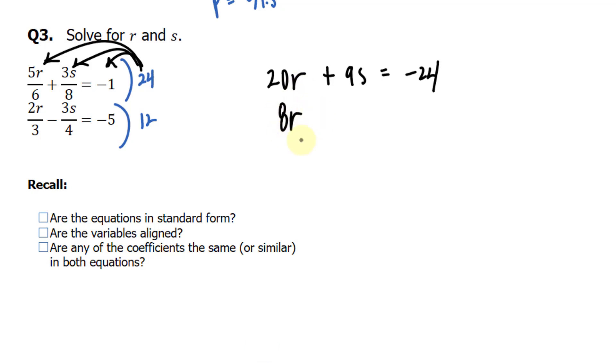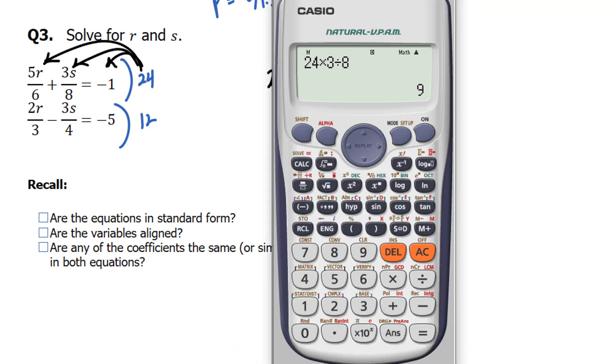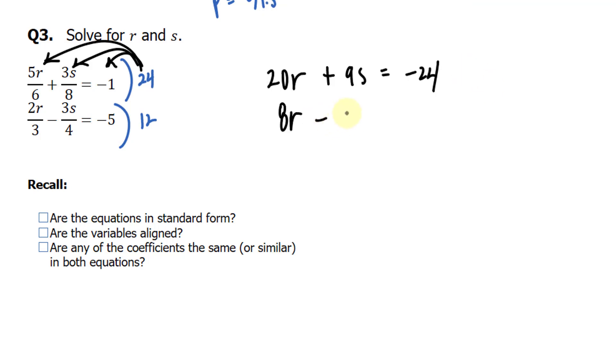12 times negative 3 over 4, again I'll show you on your calculator, 12 times negative 3 over 4 is negative 9S. And 12 times negative 5 is negative 60. So now that we're not dealing with fractions anymore, let's take a look at our checklist. Are the equations in standard form? Yes, they are. Are the variables aligned? Yeah, R and S are in the same positions.